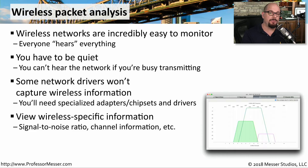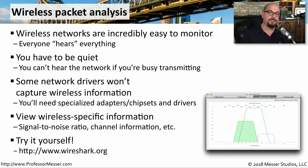But once you have the right adapter card, you're able to gather a lot of wireless-specific data. Not only can you see the IP traffic going across the wireless network, you can see the wireless protocols, the signal-to-noise ratio, channel information, and other wireless details. Using Wireshark on a wireless network can provide much of this information, and a number of third-party tools can also gather these details from a wireless network.